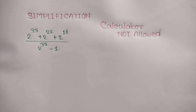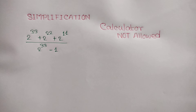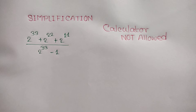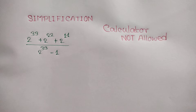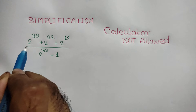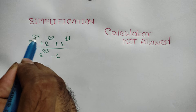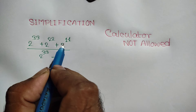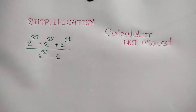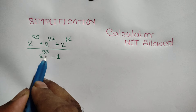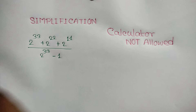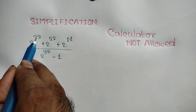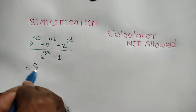Hi everyone. In this video I am going to show how to simplify this math problem without a calculator. The problem is: 2 to the power 33 plus 2 to the power 22 plus 2 to the power 11, over 2 to the power 33 minus 1.